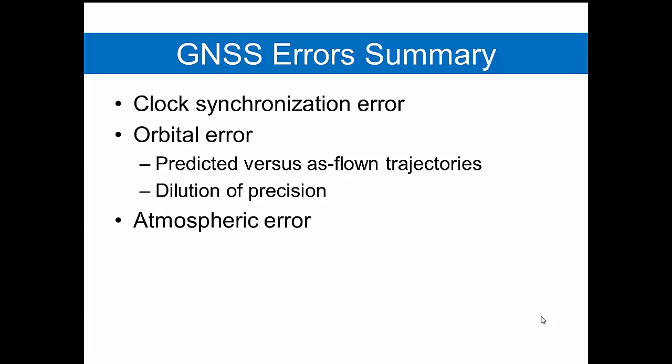Not only does the troposphere affect GPS signals, but the ionosphere especially induces an error that we must account for. Multipath error is caused by conditions on the ground near our receiver, and we must understand the impact of those.